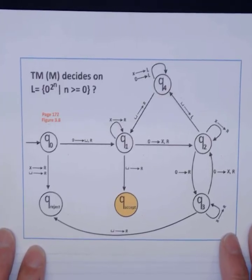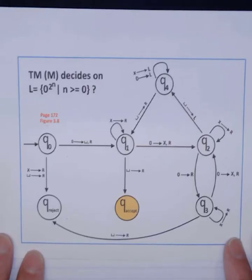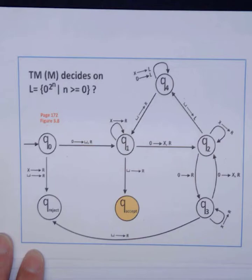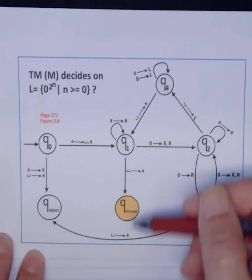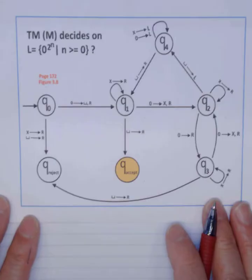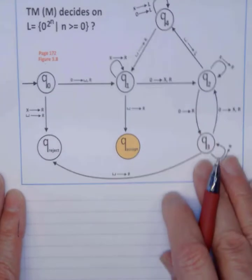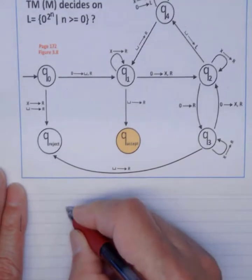So let's go through this example. The language that we are going to test is 0 to the power 2^n, such that n greater than or equal to 0. We can't test 0 because if we test 0, we're done. But we're going to test 4 zeros. So I'm going to move this a little bit up, and then I'm going to test for 4 zeros.